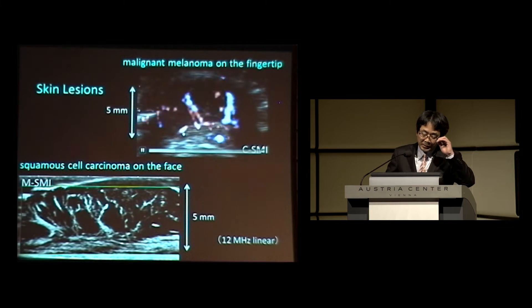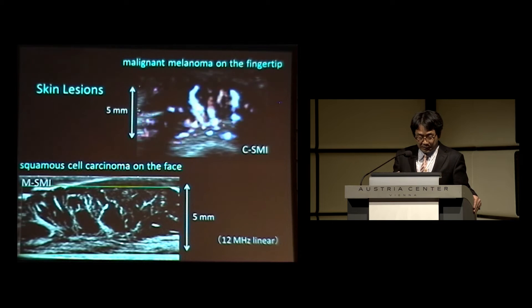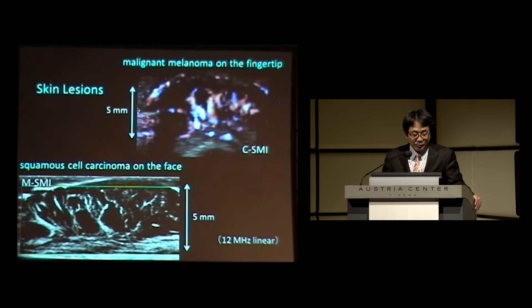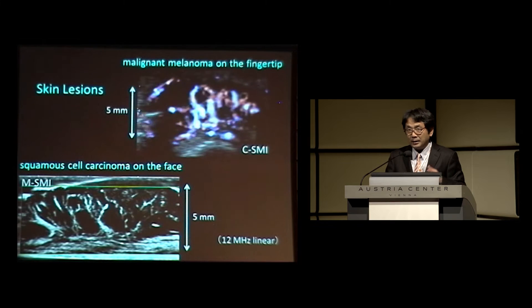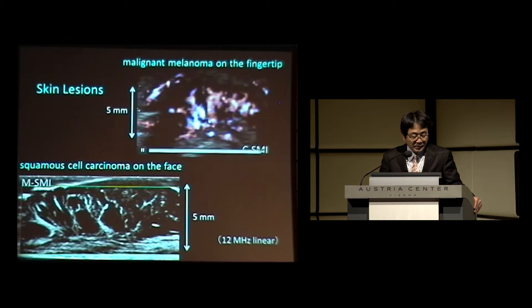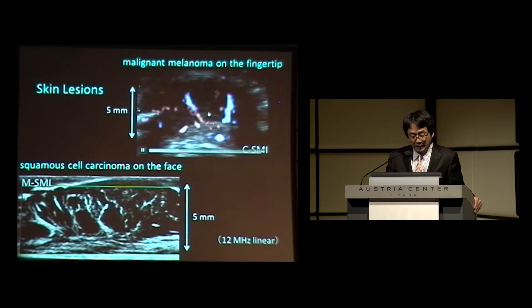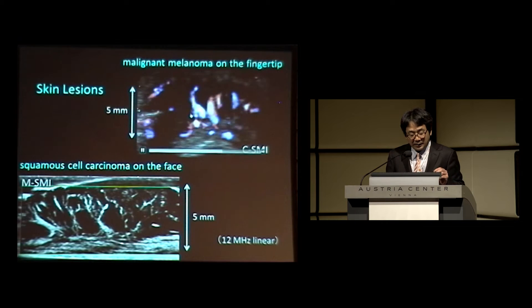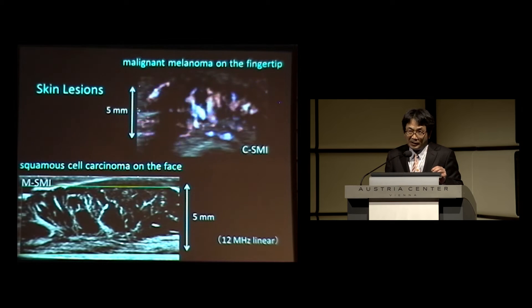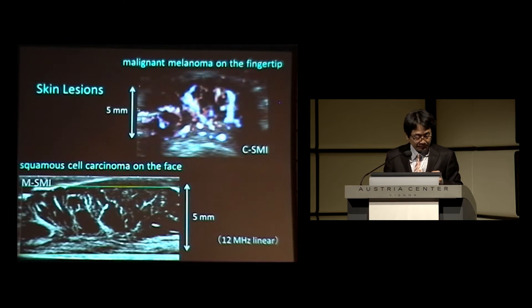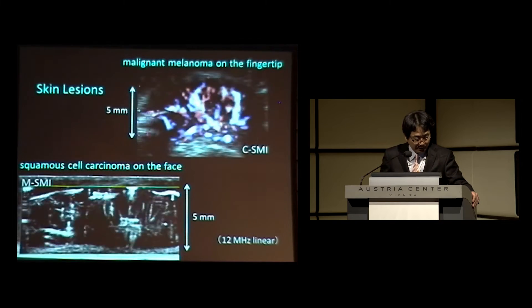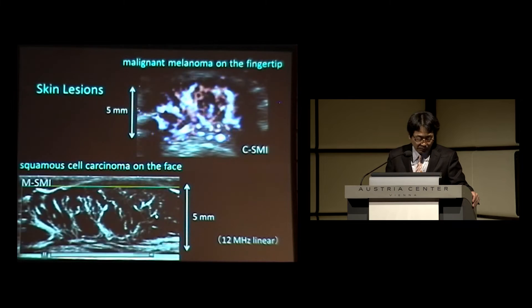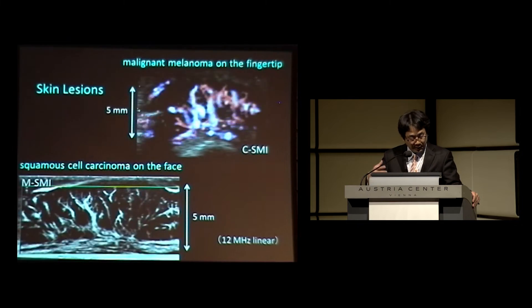Superficial lesions, such as skin lesions or superficial lymph node lesions, are good options for SMI, because you can use higher frequency probes without worrying about attenuation of the ultrasound beam. This is a malignant melanoma on the fingertip. Even in a tiny tumor like this, SMI can delineate the rich vascularity inside. The same applies to this squamous carcinoma on the face — also a very tiny tumor, but you can see a branch-like structure and rich vascularization.